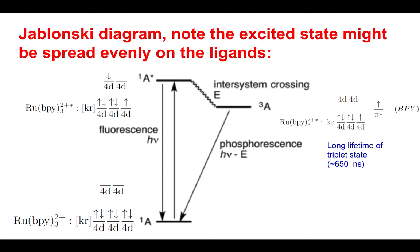When the electrons pair, there's some penalty due to electron-electron repulsion. But in this case, it's more energetically favorable to pair than to go to this higher energetic state. This gap between the D orbitals is greater than the energy penalty for electron-electron repulsion.